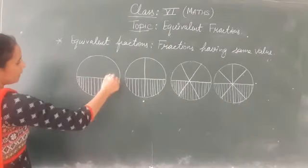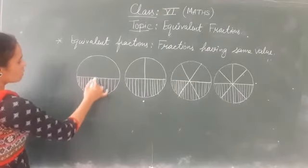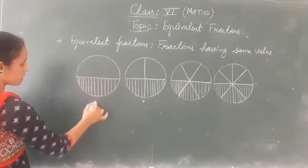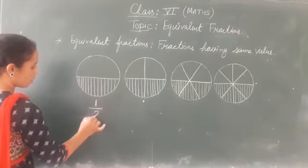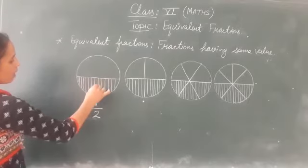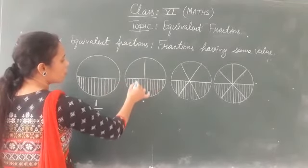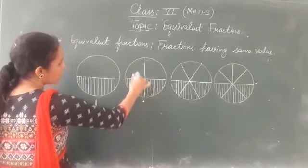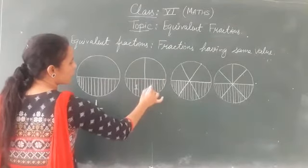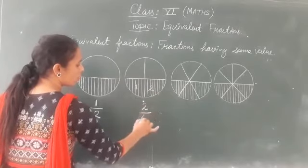See that if you want to write the fraction for this shaded portion, this is one part out of two parts. One part is shaded out of two equal parts. Here your figure is divided into four equal parts and from these four equal parts your two parts are shaded. So this fraction is 2 upon 4.